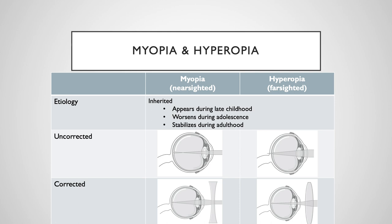Myopia and hyperopia can be grouped together and are both inherited, appear during late childhood, and often worsen during adolescence as the body begins to rapidly grow. During adulthood, refractive error tends to stabilize and does not usually worsen.